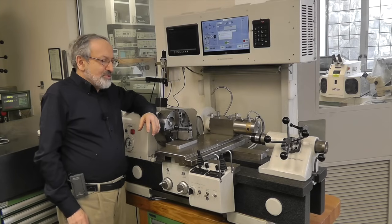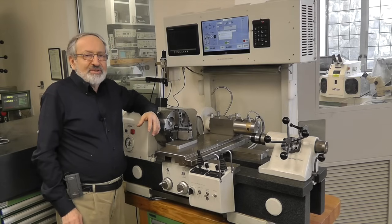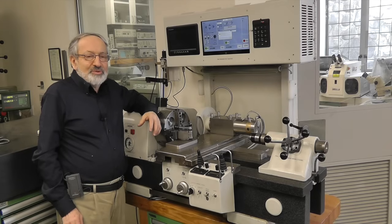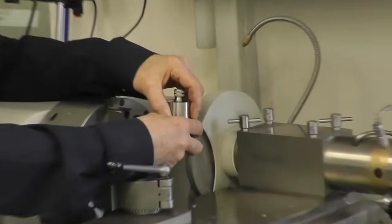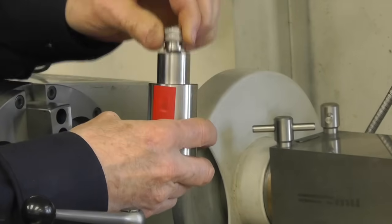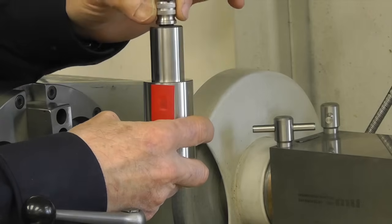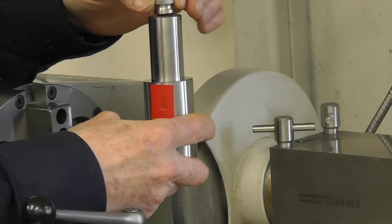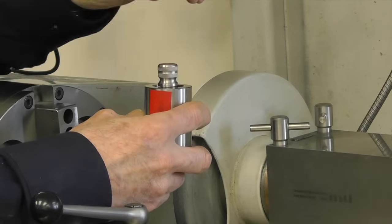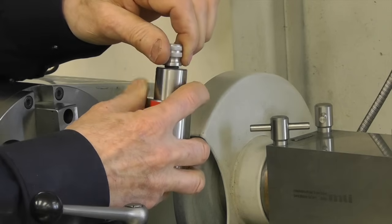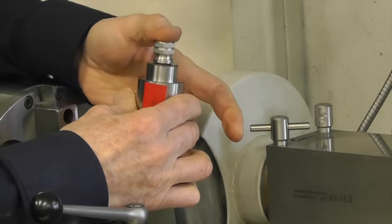The first question that comes to mind is why does a fellow need a machine accurate to one micron. It turns out there's a lot of jobs where you need a machine like this, and I'll show you one example. Here is a cylinder and a piston made on this lathe. You can see that the piston is a complete sliding fit in the cylinder. Now if I seal off the air vent on top, you can see it's completely airtight.